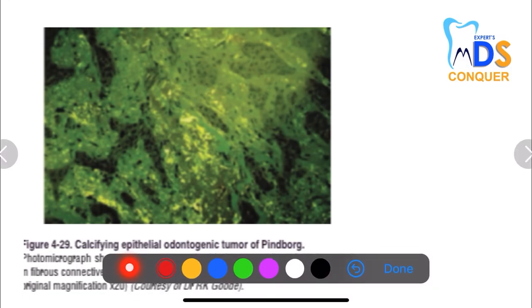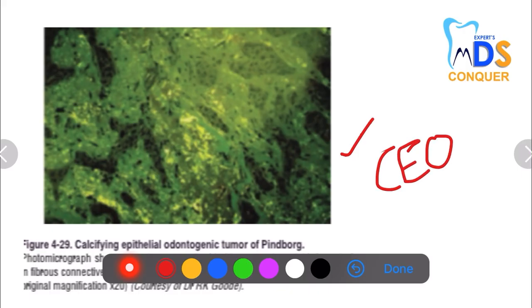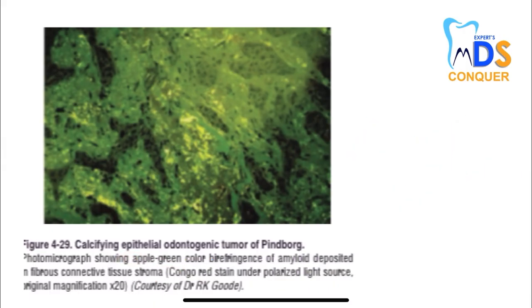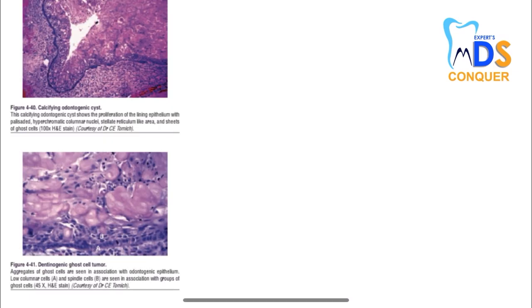Next, apple-red birefringence is seen with the Congo red stain and is associated with CEOT (calcifying epithelial odontogenic tumor) or the Pindborg tumor. Under a polarized light source you can see the apple-green/red color birefringence of the amyloid. This amyloid giving apple-green birefringence is seen with CEOT or the Pindborg tumor.